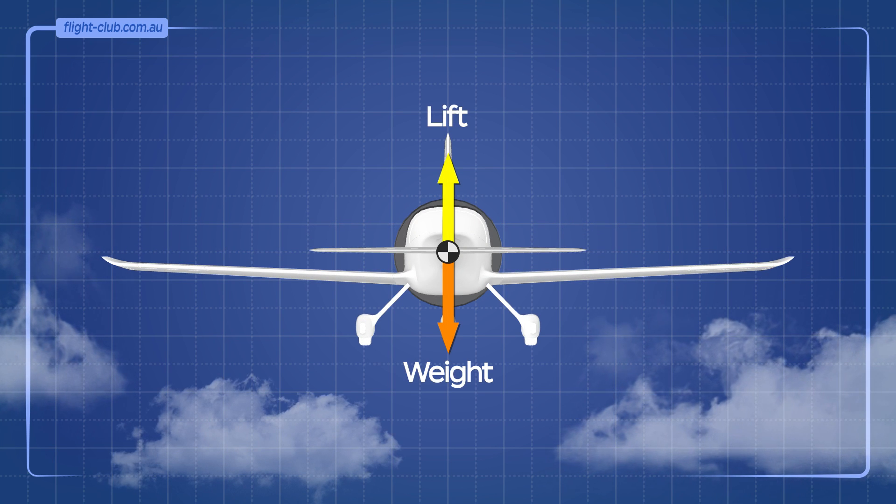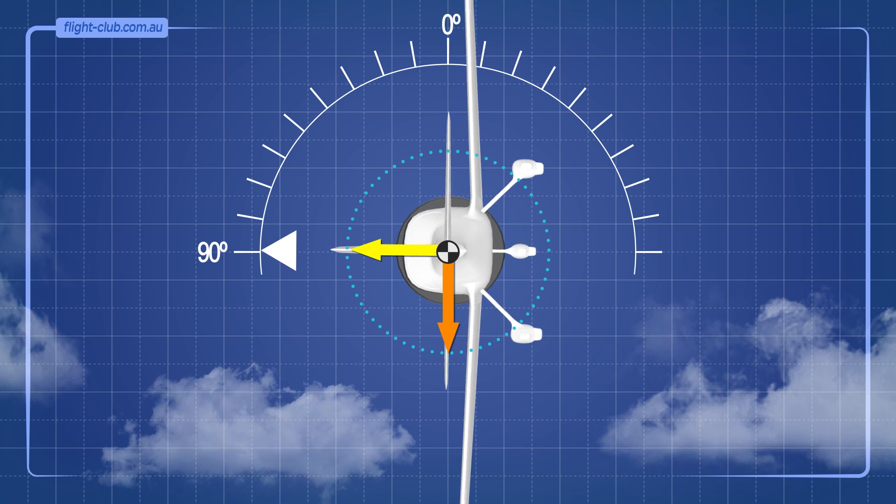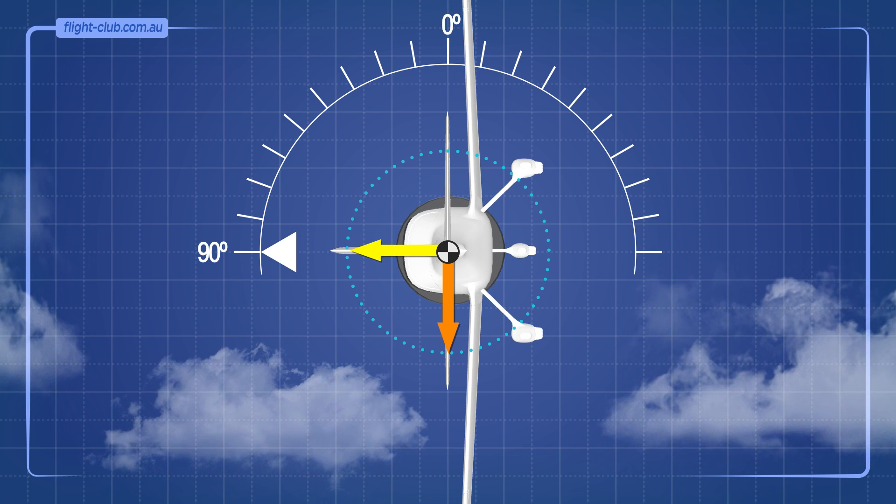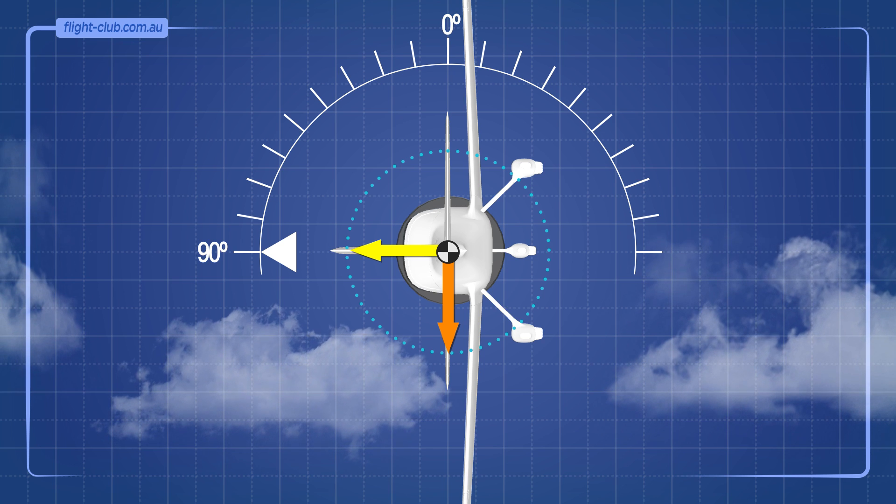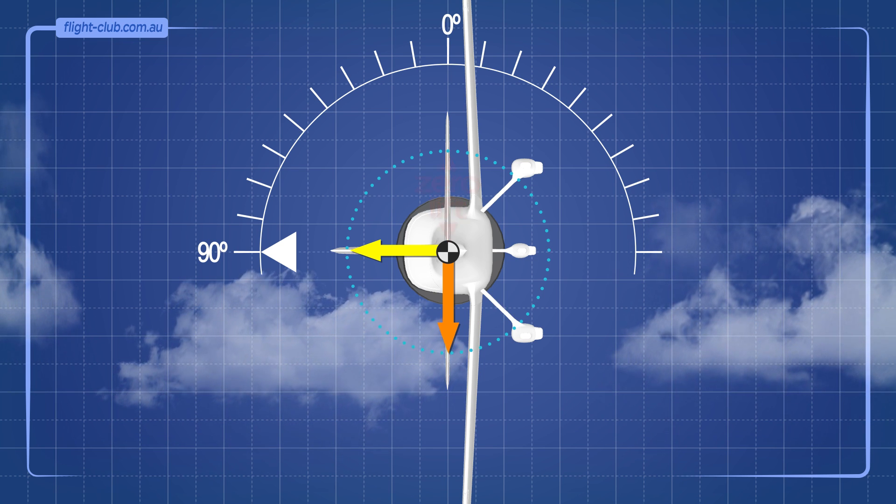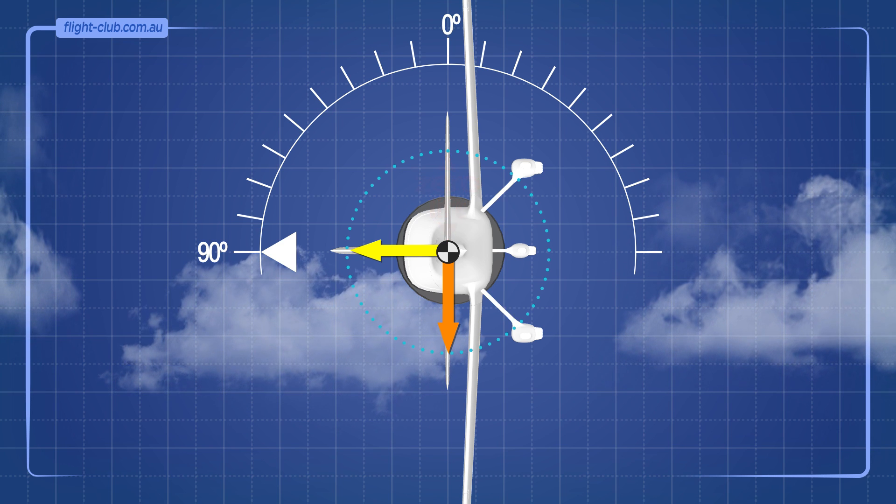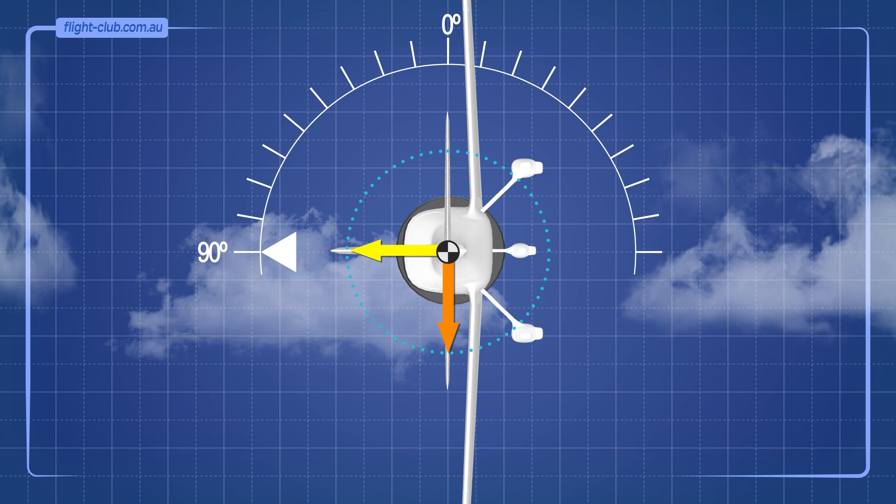In straight and level flight, lift is equal and opposite to the aeroplane's weight. At a 90 degree angle of bank however, the vertical lift component that opposes weight and keeps the aeroplane aloft is reduced to zero. The aeroplane does not maintain its altitude because the lift is completely horizontal.